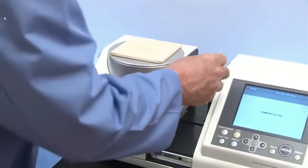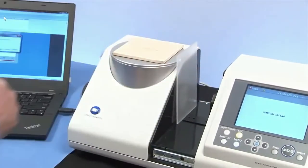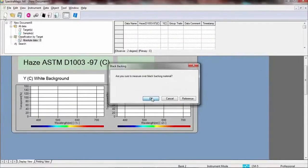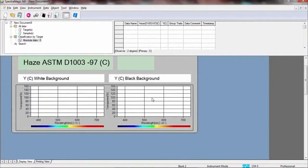SpectraMagic NX allows for measurements of haze with the use of a custom template, an important quality control procedure for many industries.